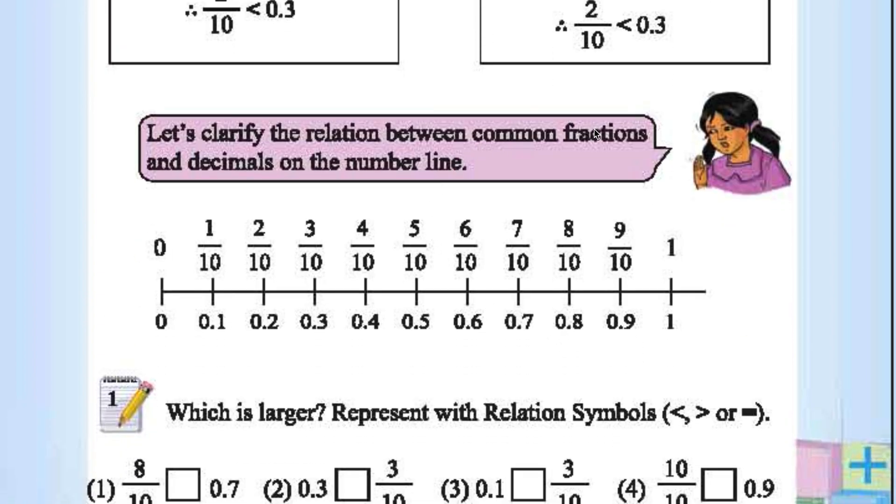Let's clarify the relation between the common fractions and decimals on the number line. 0.1 is written as 1 by 10. 0.2 is 2 by 10. And so on.